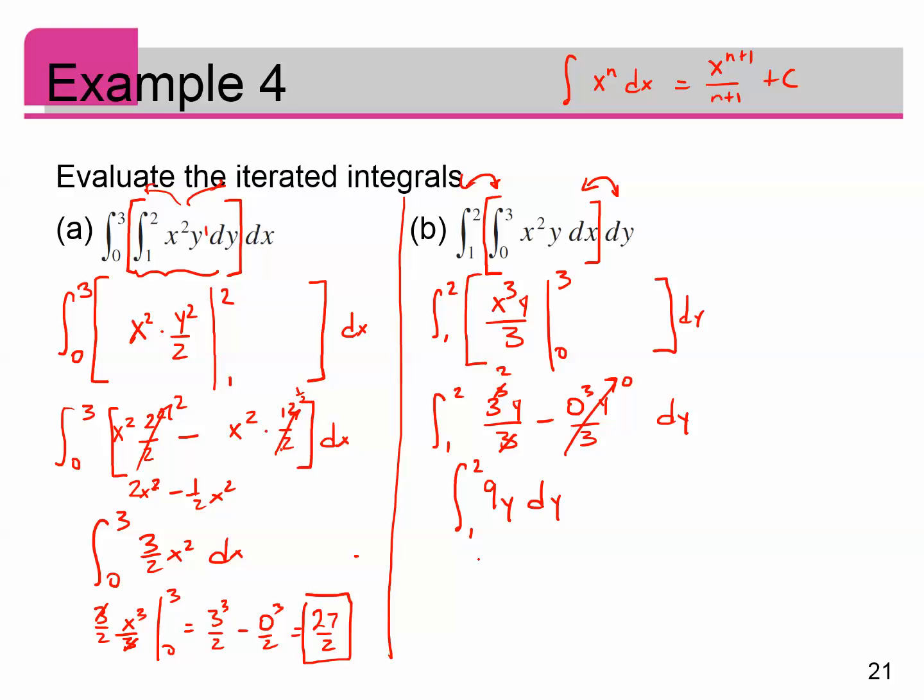So we integrate. You get 9Y squared over 2, because the integral of Y is Y squared over 2, from 1 to 2. That's 9 times 2 squared over 2 minus 9 times 1 squared over 2. So that's 9 halves. This is 18, because 9 times 2 squared over 2. One of the 2s cancels. You get 18 minus 9 halves. That's 36 over 2 minus 9 over 2, or 27 halves.